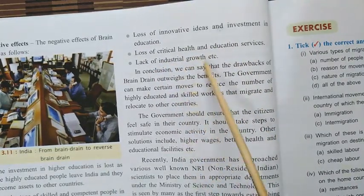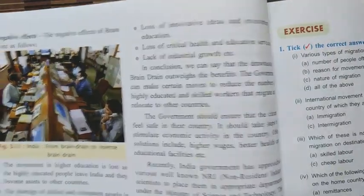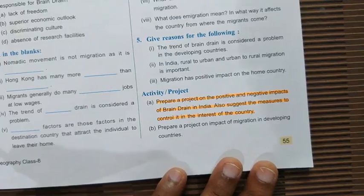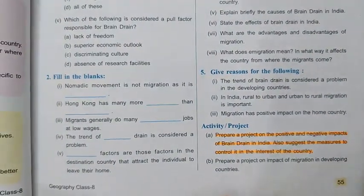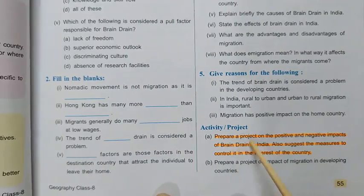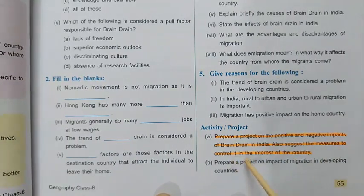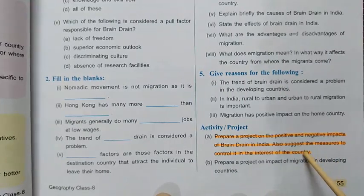These are the positive and negative effects of brain drain. The chapter portion for the first semester is now complete — there are only three chapters to study. Question answers will be sent very soon and made available on the website. The summer assignment is to prepare a project on the positive and negative impacts of brain drain in India, and to suggest measures to control it in the interest of the country. Write it in three or four pages in your fair copy. All the best, goodbye.